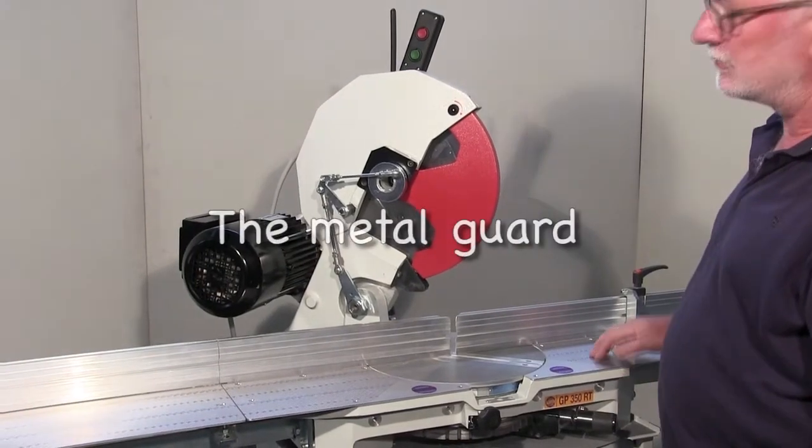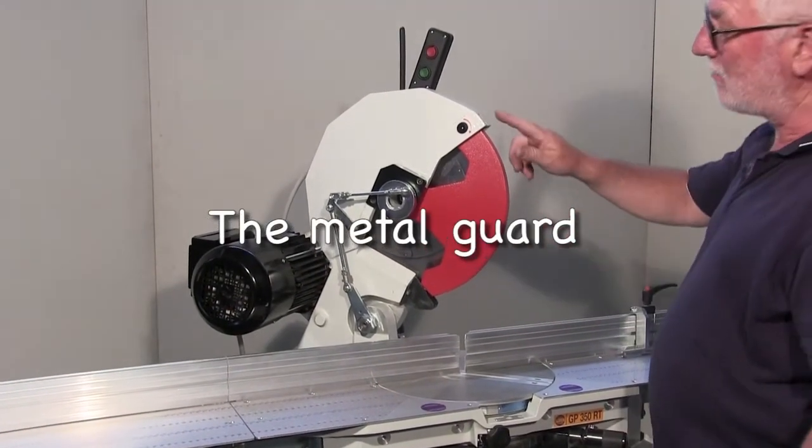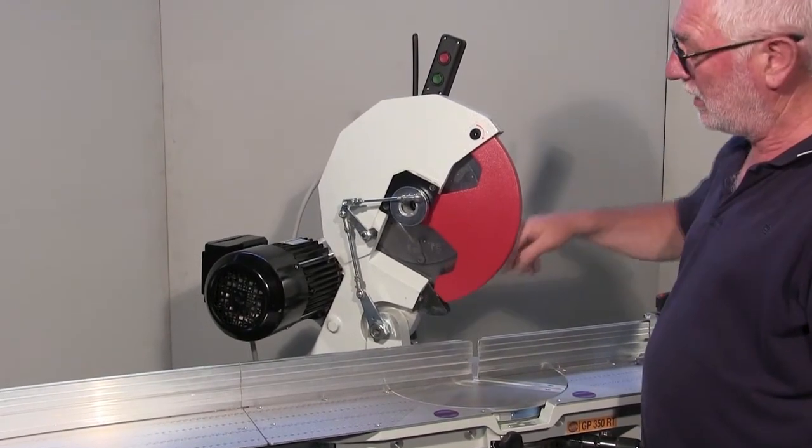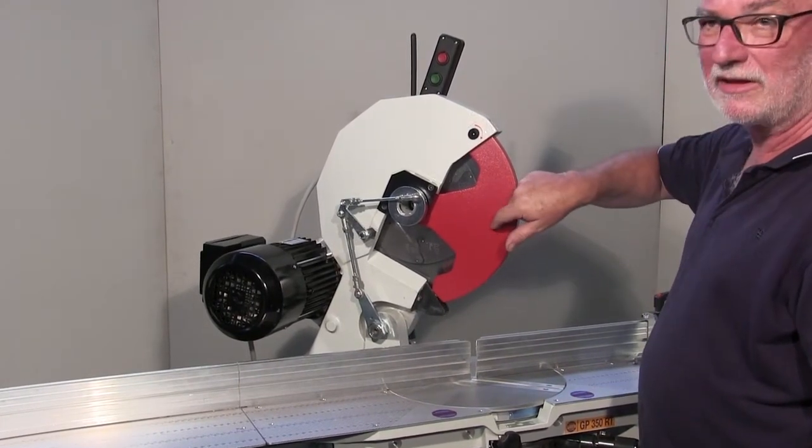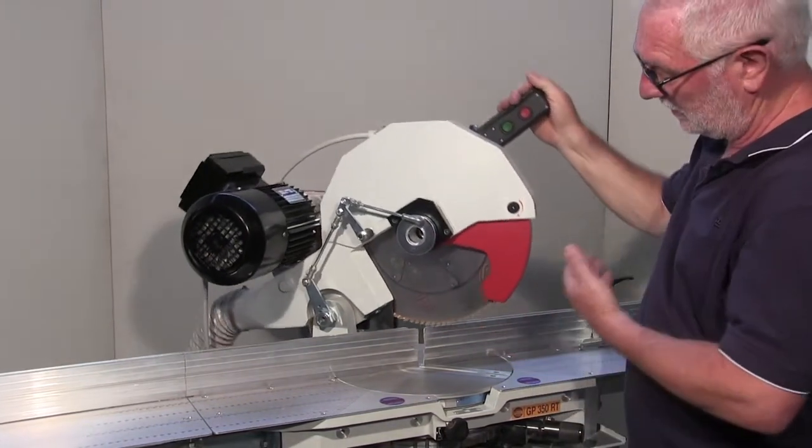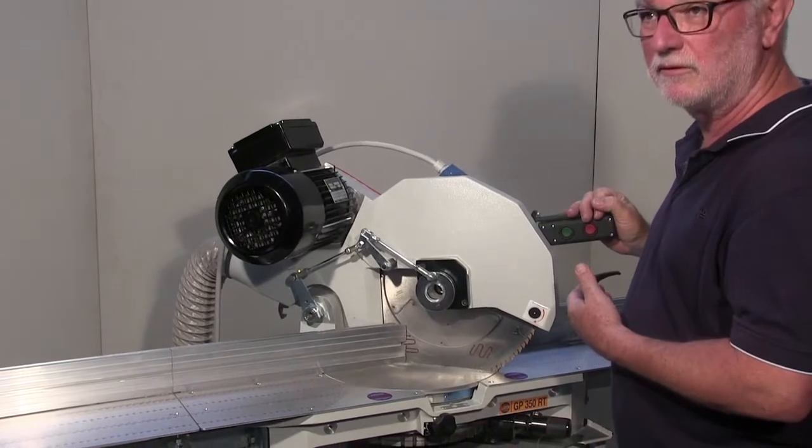The blade guard is made of this metal cover that guarantees more safety than the plastic protection used by other saws. When lowering the blade, the guard gradually disappears to allow the cut.